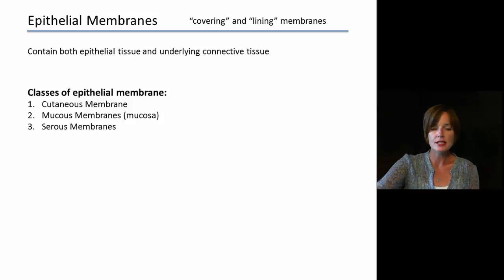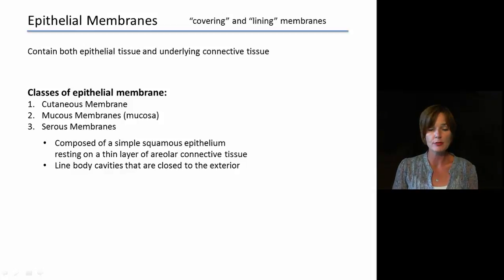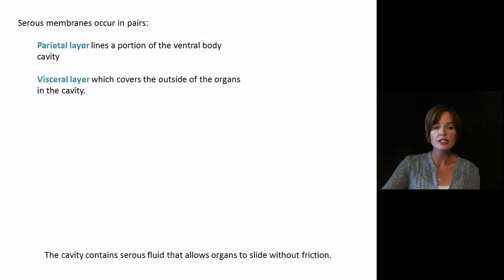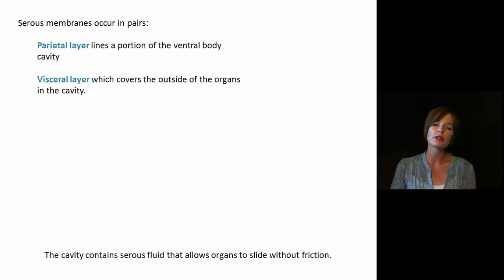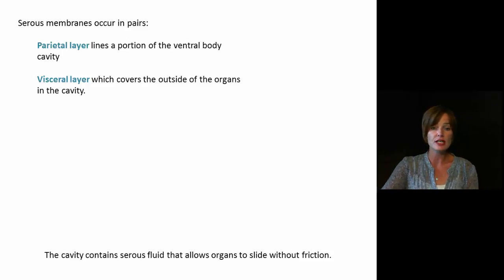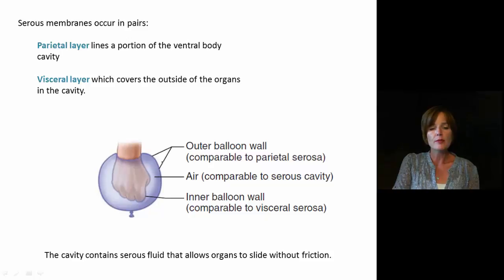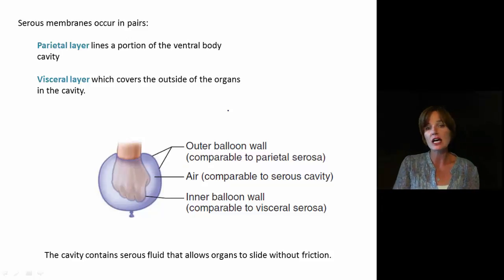The third type of membrane is the serous membrane. Serous membranes are composed of simple squamous epithelium resting on top of a thin layer of areolar connective tissue. These line body cavities that are closed to the exterior. They occur in pairs with two layers: a parietal layer that lines a portion of the cavity, and then that folds in to form a visceral layer, which covers the outside of the organs inside the cavity. Think of it like a balloon — if you put your fist into it, the outer layer is the parietal layer and the inner punched-in layer is the visceral layer, next to any organs in that particular cavity.